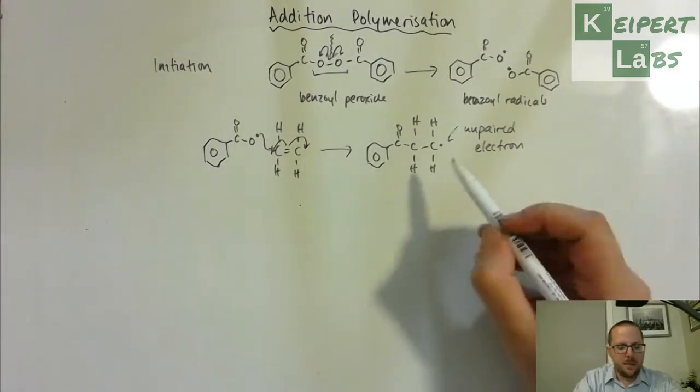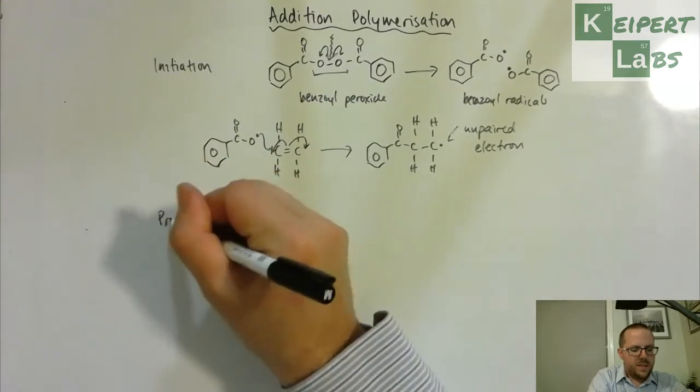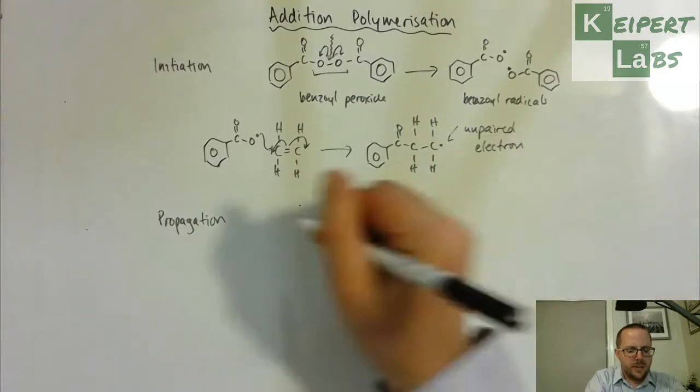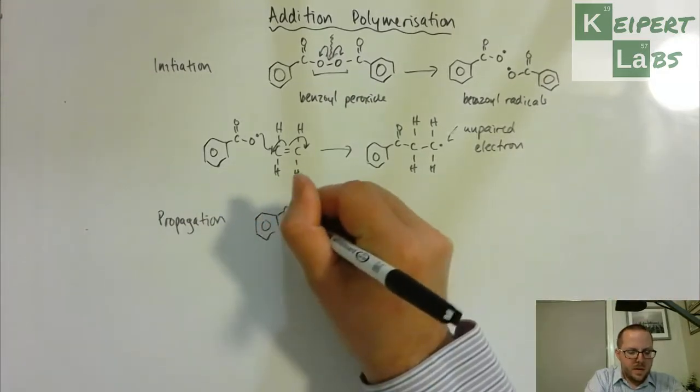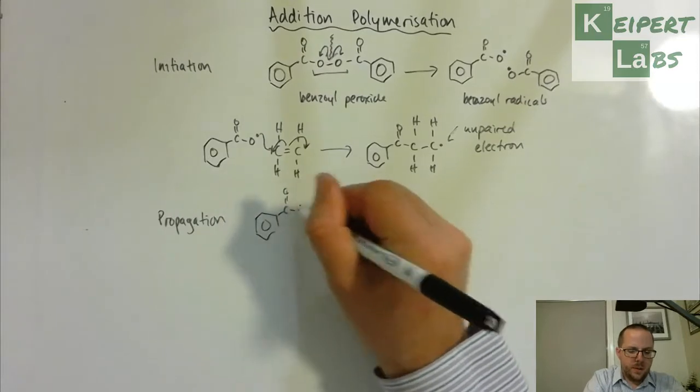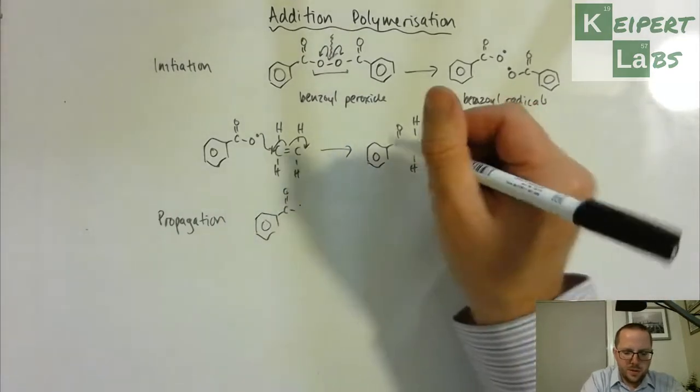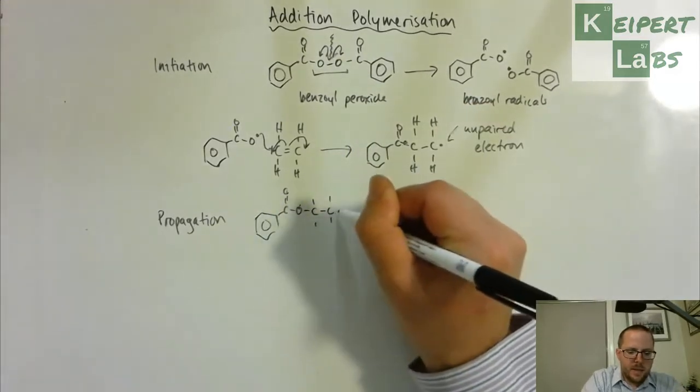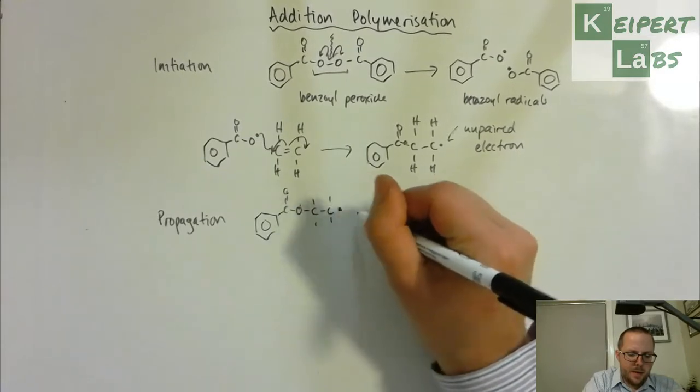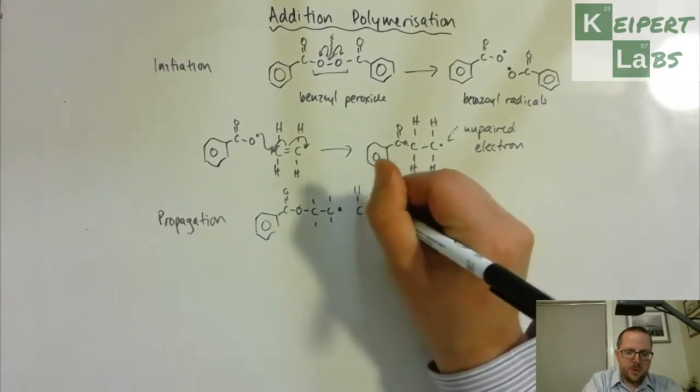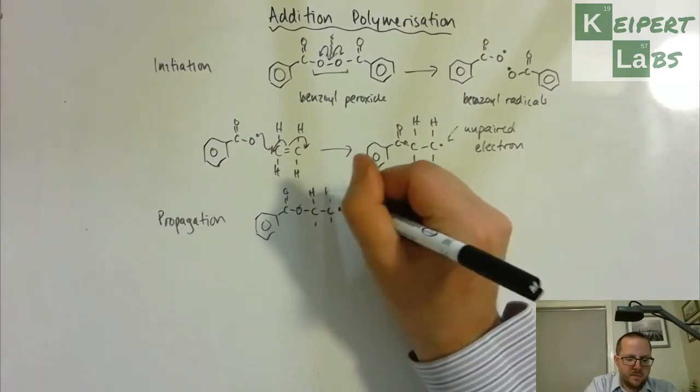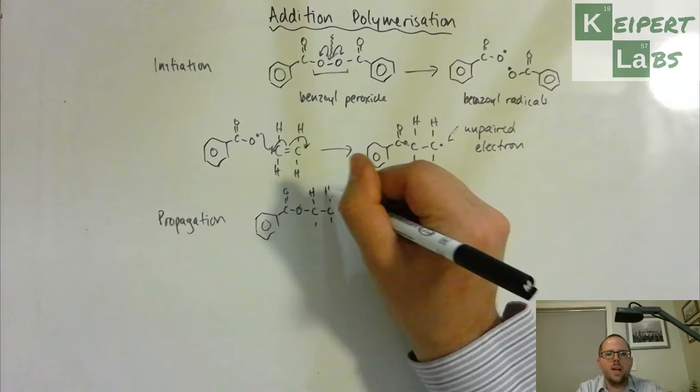And what happens then is that this begins a chain reaction that continues, and so then the next, it can approach another alkene molecule because there's, oh sorry, there should be an oxygen in here. There's plenty of other alkene molecules around when this process is happening. So just like nuclear radioactive decay, one starts and then leads to the next which leads to the next.